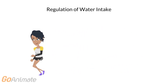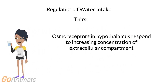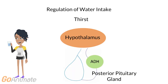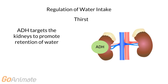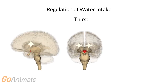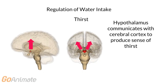Water balance is regulated by several mechanisms. For example, when we exercise, osmoreceptors in the hypothalamus sensing changes in blood concentration, part of the extracellular compartment, send messages to the posterior pituitary gland to secrete anti-diuretic hormone, or ADH. ADH targets the kidneys to promote retention of water. The hypothalamus also sends messages to the cerebral cortex to produce the sensation of thirst.